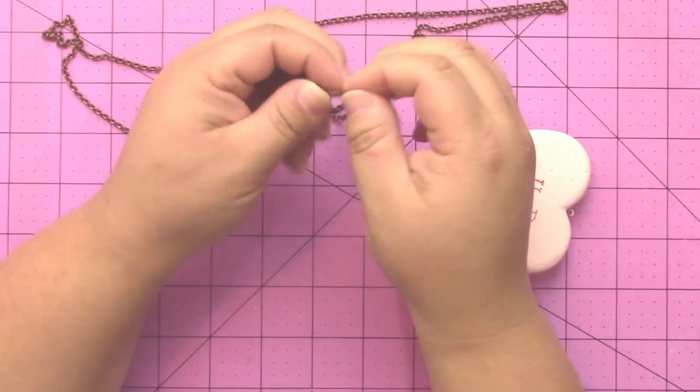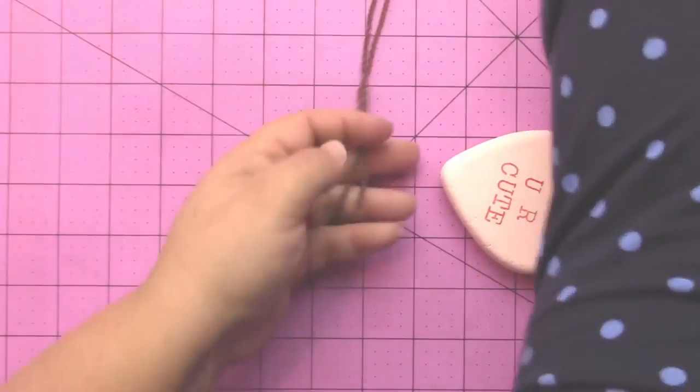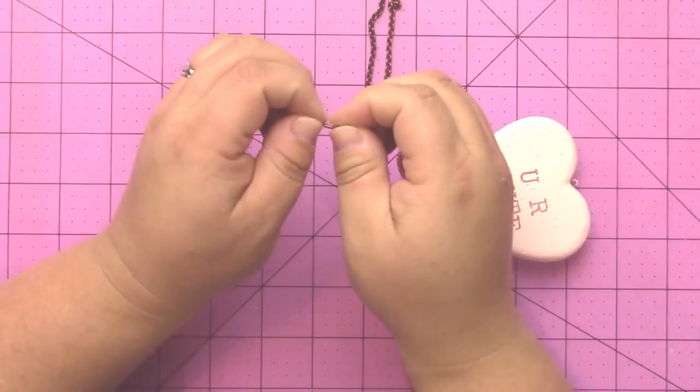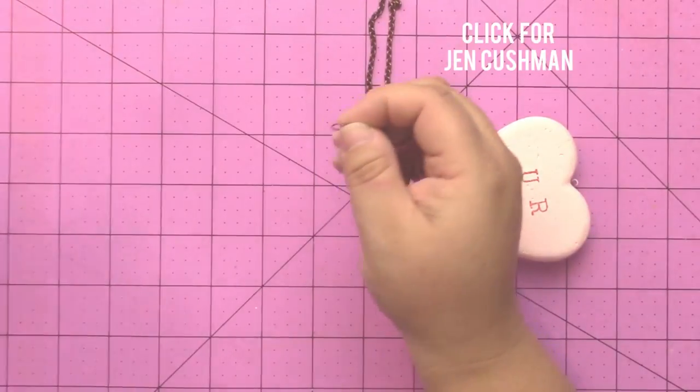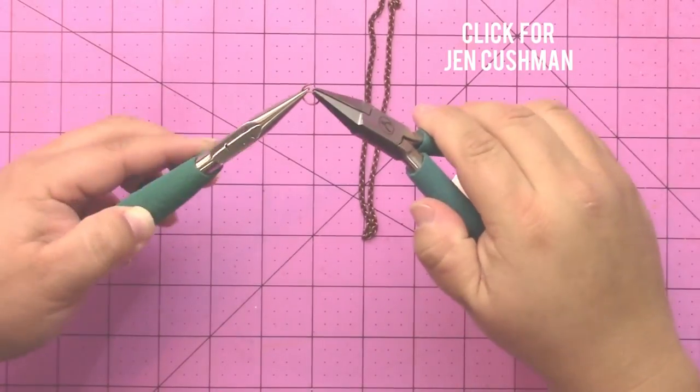Then I'll use another jump ring to attach the heart pendant to the chain. This is a technique that Jen Cushman showed me. You use your two different pairs of jewelry pliers to open the jump ring from side to side, and then once you've put your pendant on and your piece of chain through it,